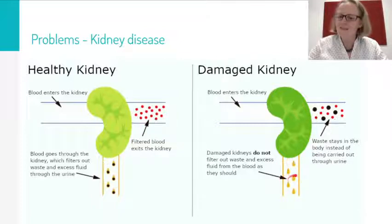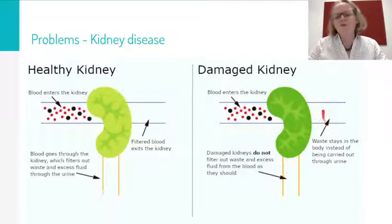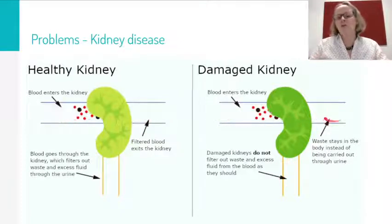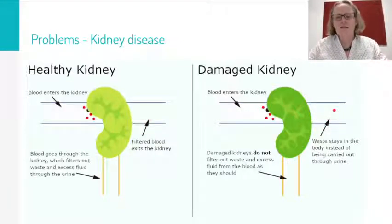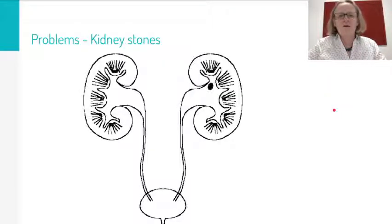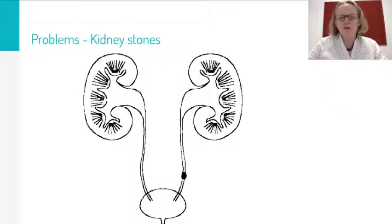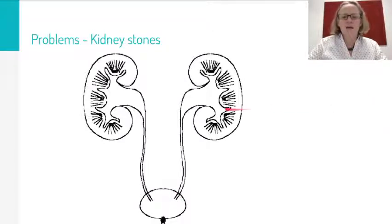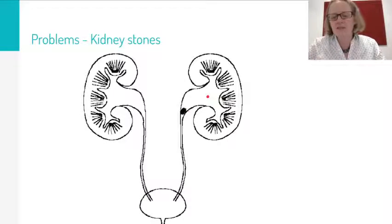So the waste stays in the blood, which is going to cause toxic effects in the person. Another problem we have with kidneys is kidney stones. You can see little crystals here forming in the kidney, perhaps because the diets are particularly salty.